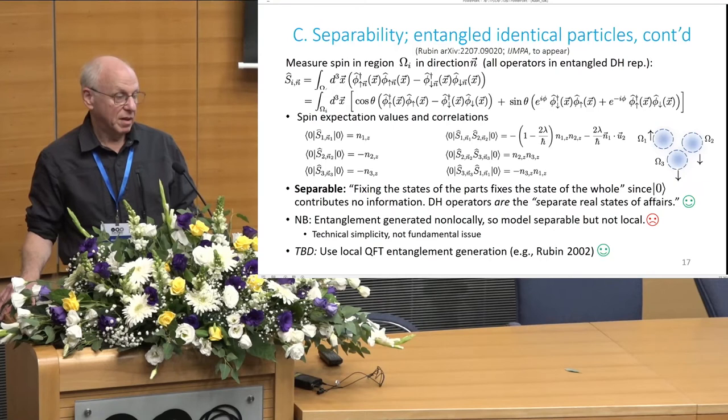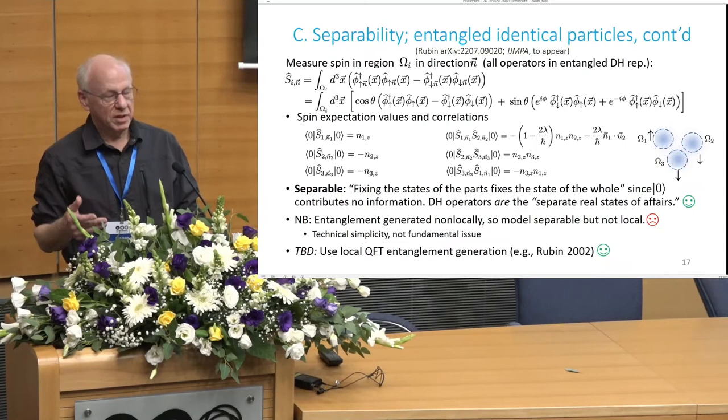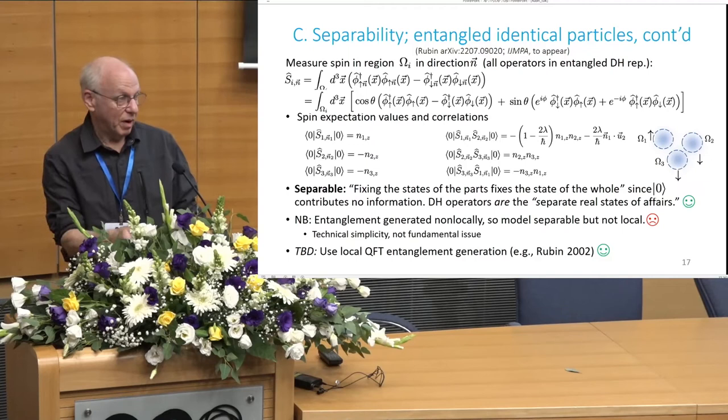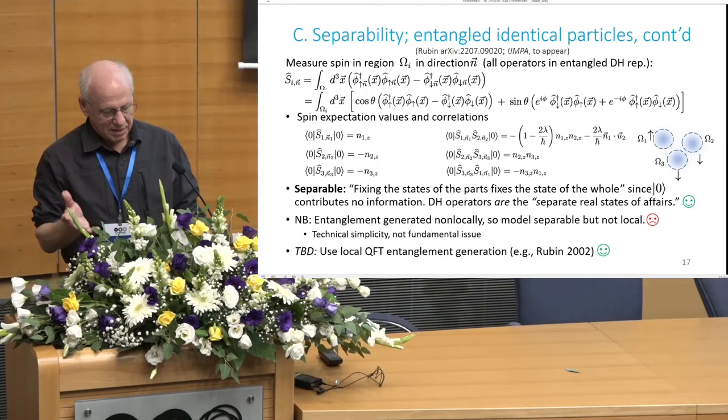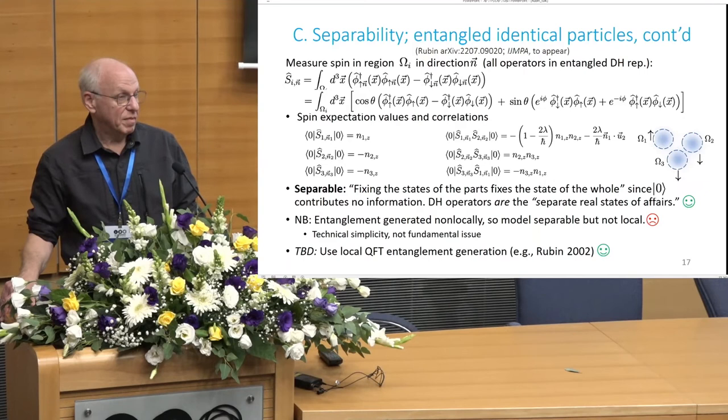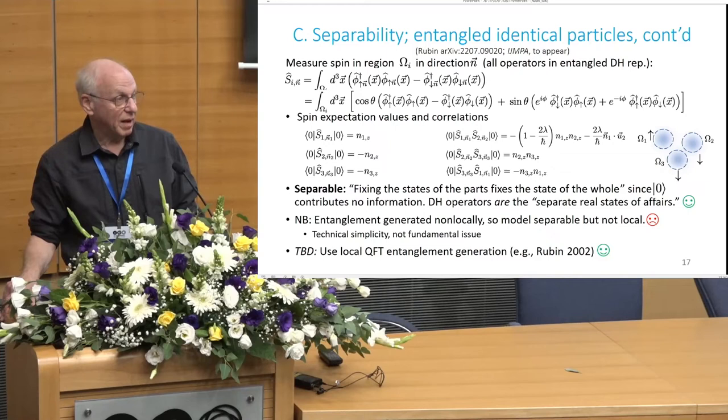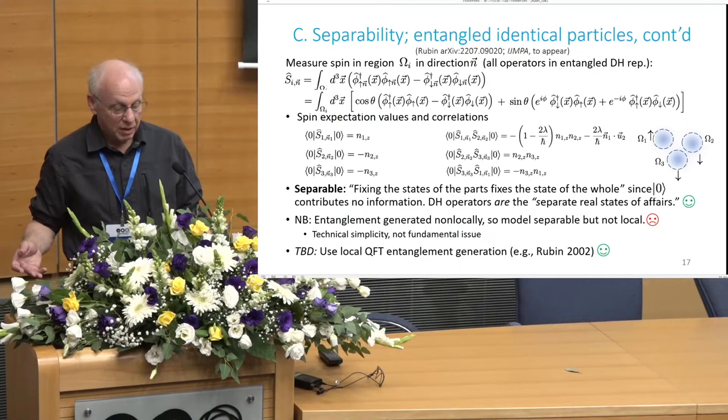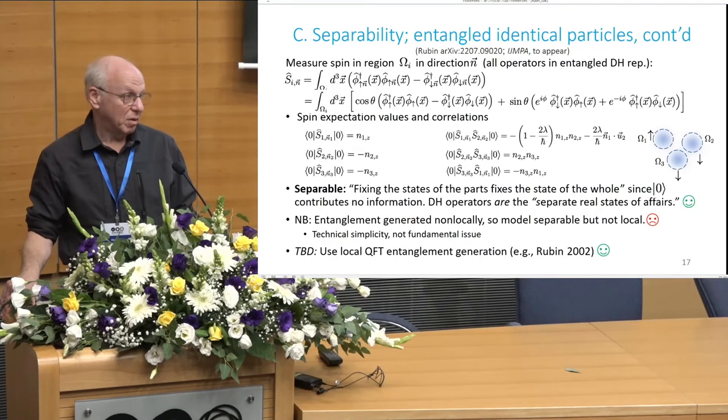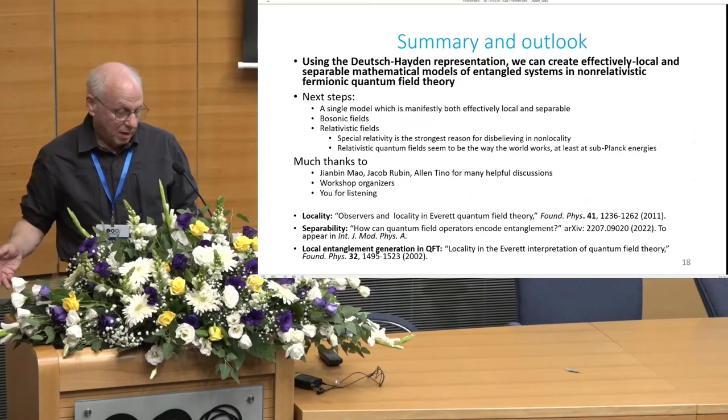So, we're happy with that. Not as happy as we could be, because in getting the explicit Deutsch-Hayden operators for the entangled state, it was necessary to do a global, non-local transformation. And so, what's going on here actually is separable, but technically not local. That's not because of any fundamental tension between the two ideas, it's just that it was technically simpler to do that here. And, in fact, there are methodologies within quantum field theory, both relativistic and non-relativistic, of generating entanglement locally. I did one myself. And so, I hope in the near future to incorporate that into here, and then have something which is both explicitly, manifestly separable, as well as local, as the previous one was.